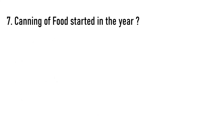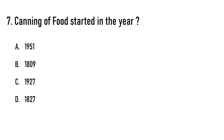Next question: Canning of food started in which year? Options are: A) 1951, B) 1809, C) 1927, D) 1827. The correct answer is option B, 1809.